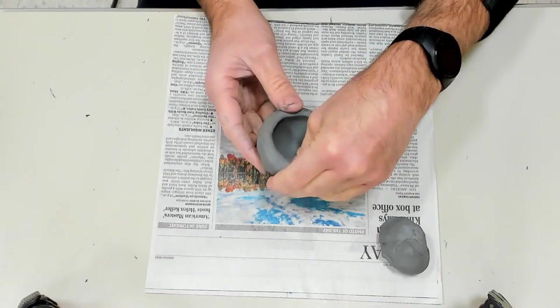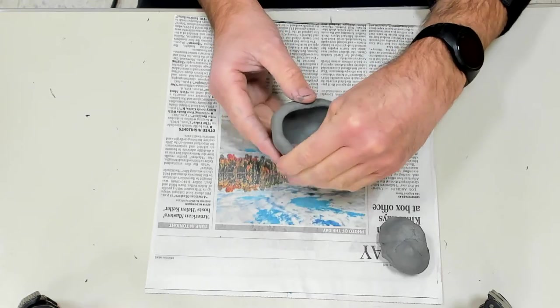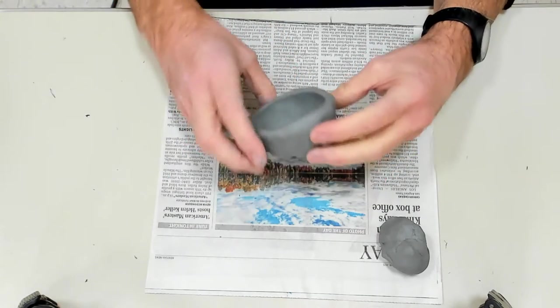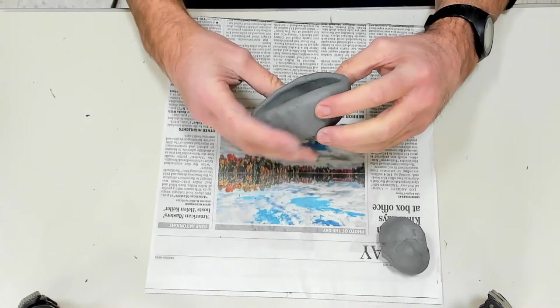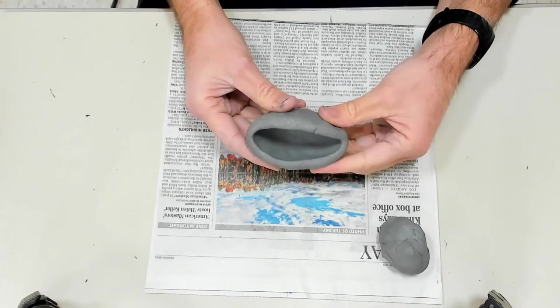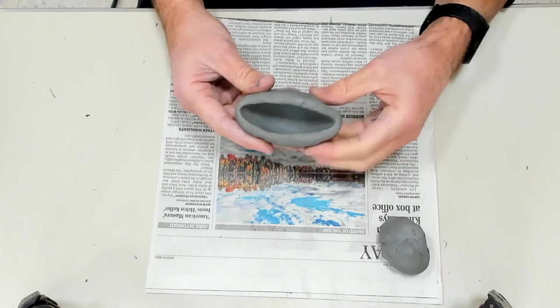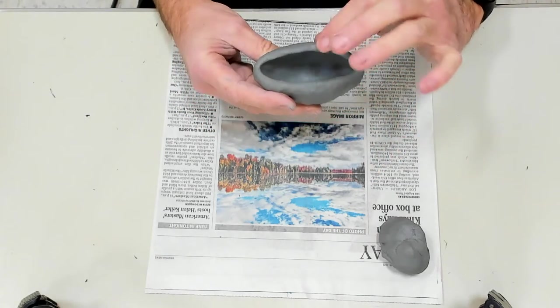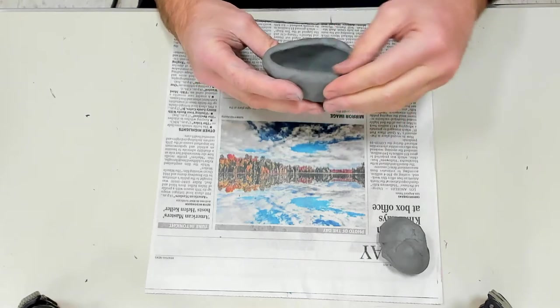It's going to be like a big head and mouth all together. I'll leave this part thicker. That's going to be like the lips of my monster. I'll just check it, make sure it's good, smooth out any cracks.